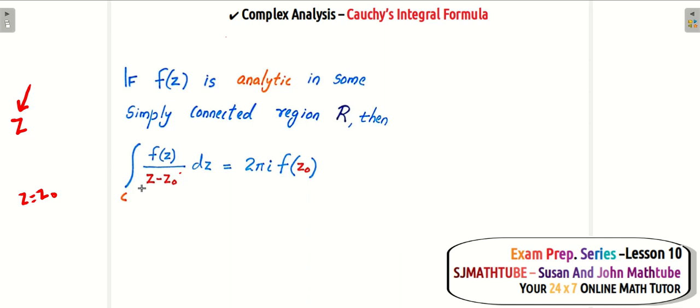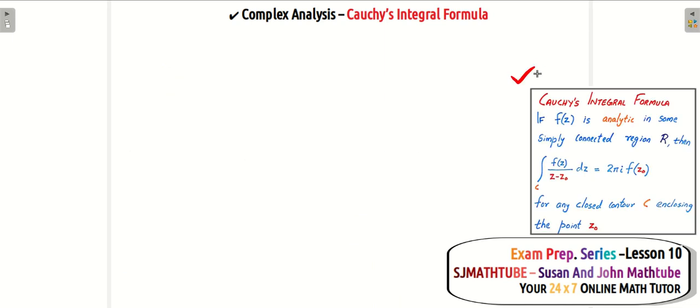So if you put z equal to z naught, the function which is inside the integral, this whole thing will become infinity and hence it is not analytic at z equal to z naught, or it's a singular point. The value of this integral is 2πi f(z naught). So you have to be very good with the statement. I will put the statement on the right side of the screen so that you can check it anytime you like.